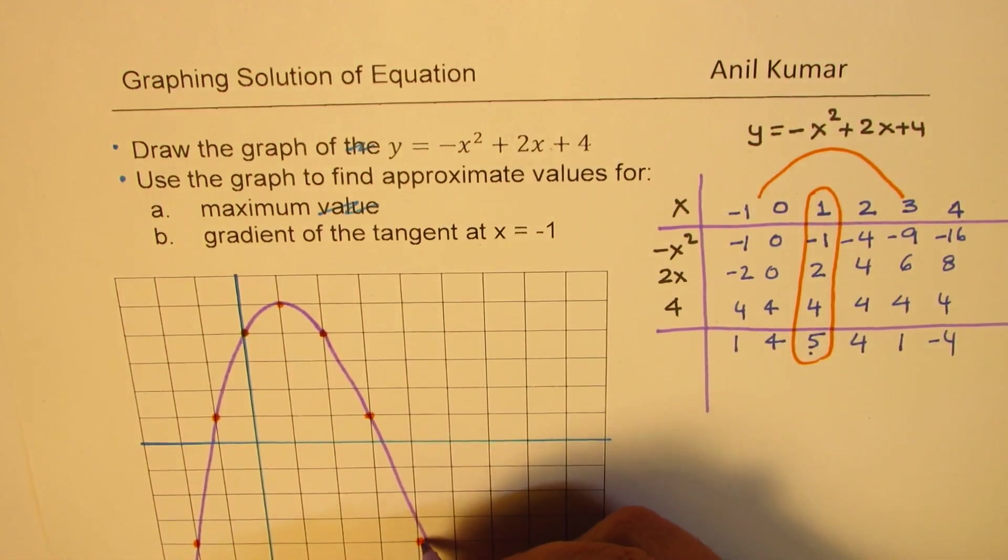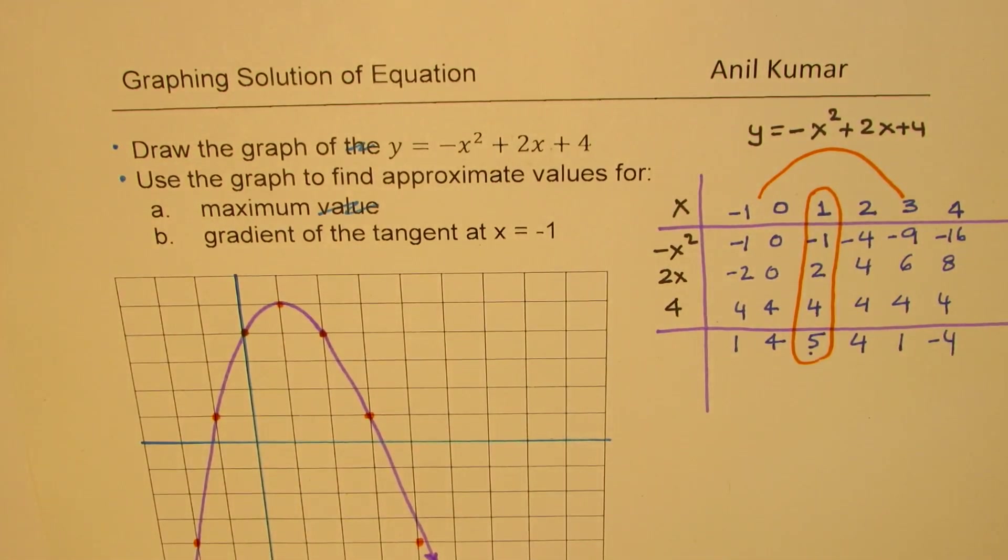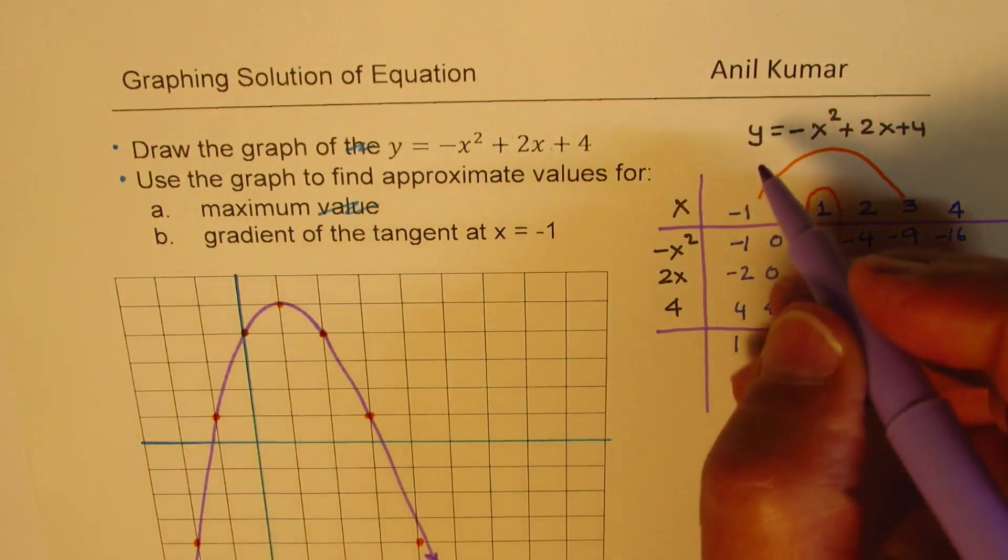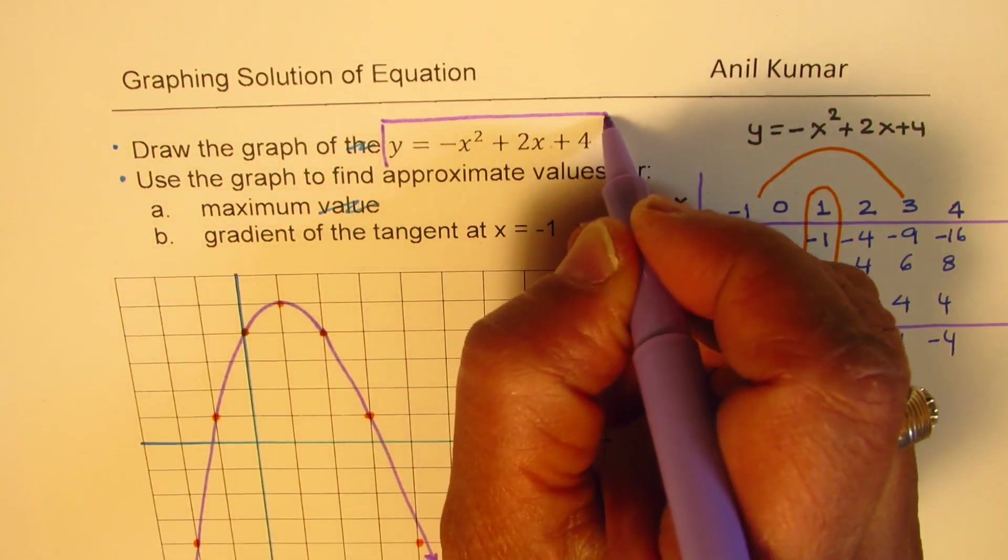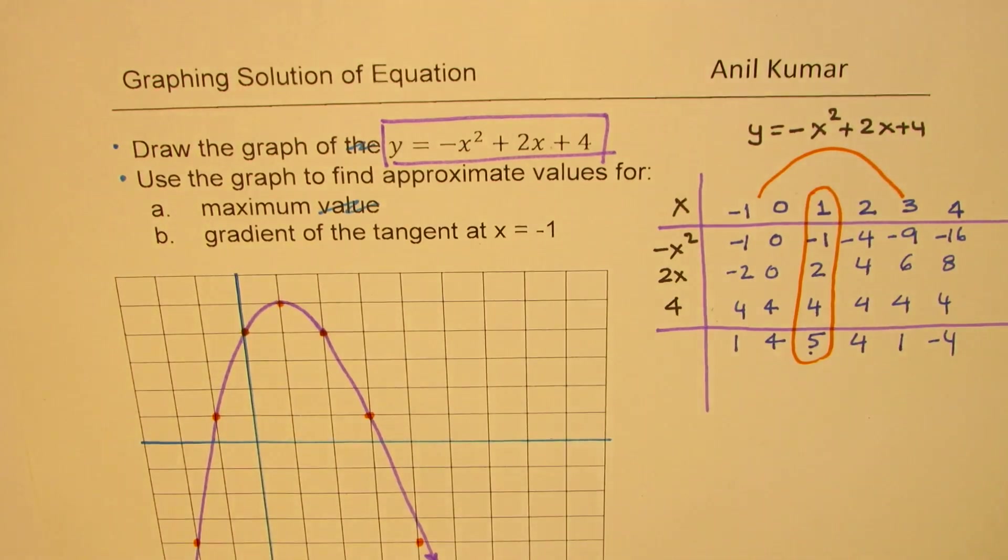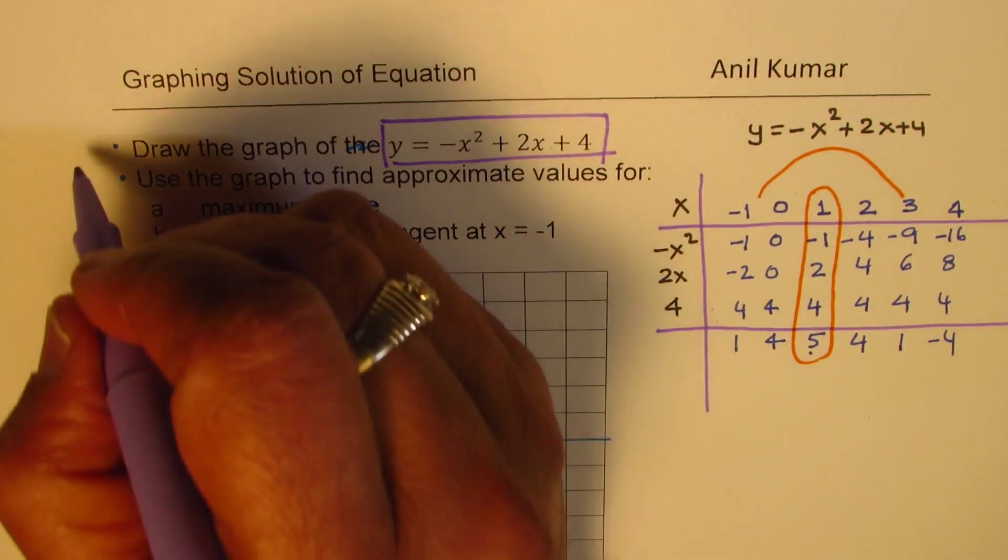It has to touch it anyway. We have a parabola which represents the given equation, which for us is y equals minus x squared plus 2x plus 4. We have done the first part.